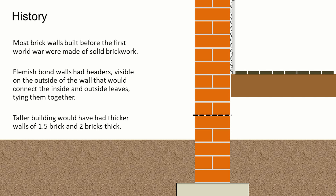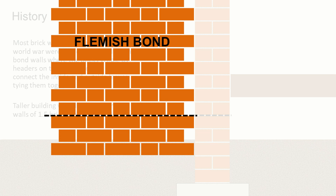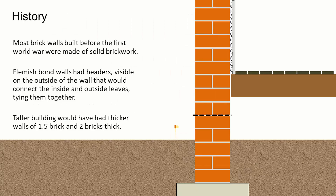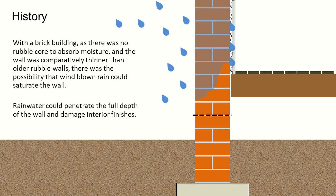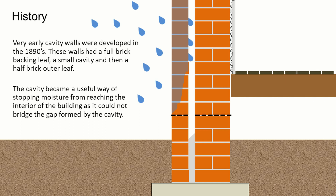we started building solid brickwork walls. Flemish bond walls had headers which were visible on the outside of the wall that would connect the inside and outside leaves, tying them together. Taller buildings had walls of one and a half or two bricks thick. With a brick building, as there was no rubble core to absorb the moisture and the wall was comparatively thinner than older rubble walls, it was possible that windblown rain could saturate the wall and penetrate the full depth of the wall, damaging interior finishes and structure.